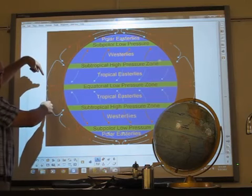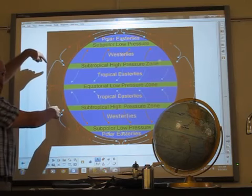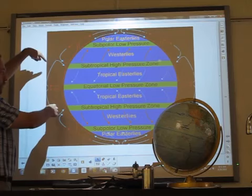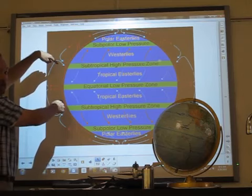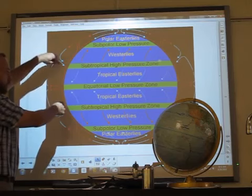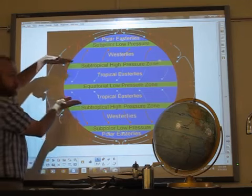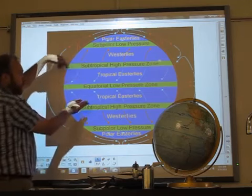As it cools and moves away, it loses its moisture, so now it's drier, and it comes back down and gets compressed and heated. So now you have hot, dry air, so you tend to have deserts about 30 degrees from the equator.